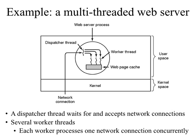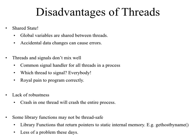However, threads have certain disadvantages. First, there is global shared state — the same advantage for inter-thread communication is also a disadvantage, because if any thread makes accidental changes to shared data all threads are affected. Careful management of concurrent access to shared data becomes the programmer's responsibility. Second, threads and signals don't mix well: with a common signal handler, when a signal arrives it's not clear which thread was the intended target, making it very complicated to program correctly.